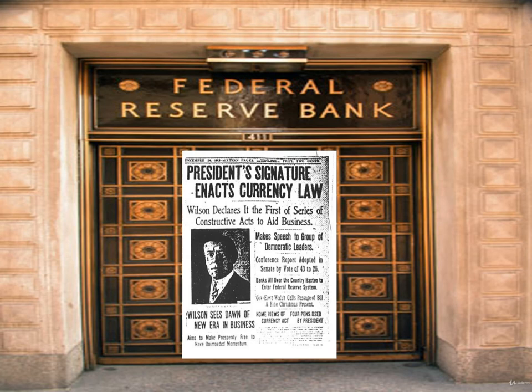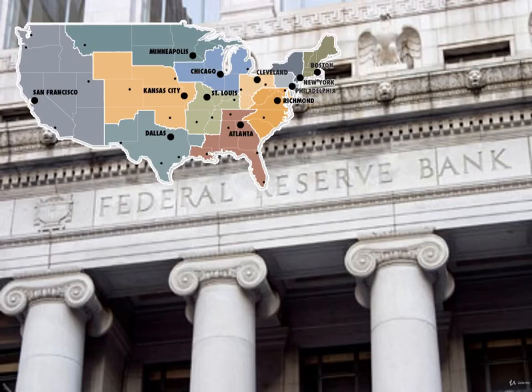After taking office, Wilson signed legislation to reform the nation's currency system. The Federal Reserve System was the result. Despite Wilson's stated desires, the bankers ensured the new Federal Reserve System was made private and not a government agency. The Federal Reserve Act established a system of eight to twelve mostly autonomous regional reserve banks that would be owned by commercial banks and whose actions would be coordinated by a committee appointed by the president.